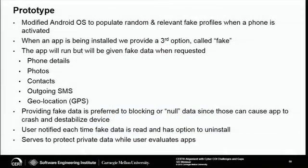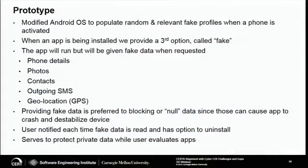We developed a prototype that creates fake profiles. We modified the Android operating system to create three to four fake profiles when the device is first activated. We provide an installation option called 'fake.' When you install an app on Android, it usually says grant the permissions — yes or no. We added a third option: fake. You choose fake, and that app will be fed fake information. The types of information faked include phone details like IMEI, device ID, photos, contacts, outgoing SMS, and GPS longitude/latitude — the most critical from a privacy standpoint.